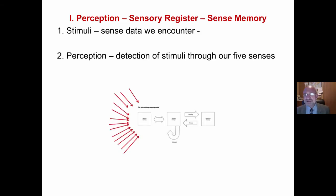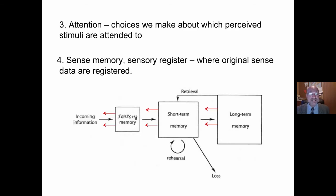Perception, sense registry, sense memory, the first part of it. First of all, stimuli. We are bombarded with stimuli. This is the sense data that we encounter. It could be sight, sounds, smells, feels, or taste. Perception is detecting the stimuli through our five senses. We are bombarded with billions of stimuli every day. We cannot attend to all of it, or we would go crazy. So we have to make choices. And that's what attention is. It's the choices we make about which perceived stimuli are attended to.